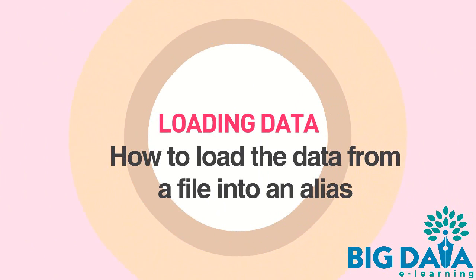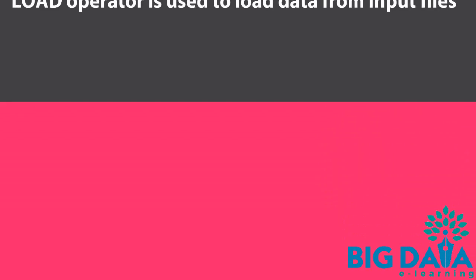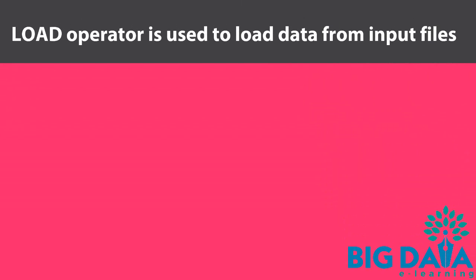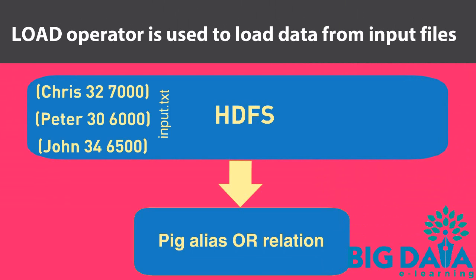Loading data — how to load the data from a file into an alias. The Load operator is used to load data from input files. For example, if the input file input.txt has the following data, then we can load the data using the statement as highlighted below.